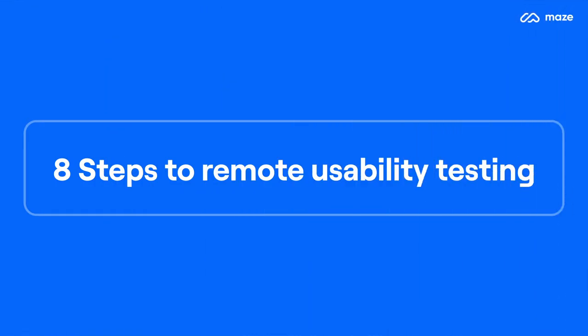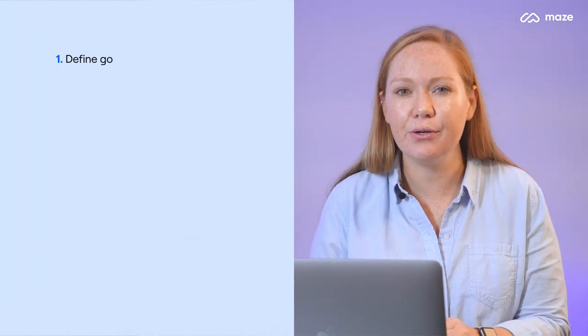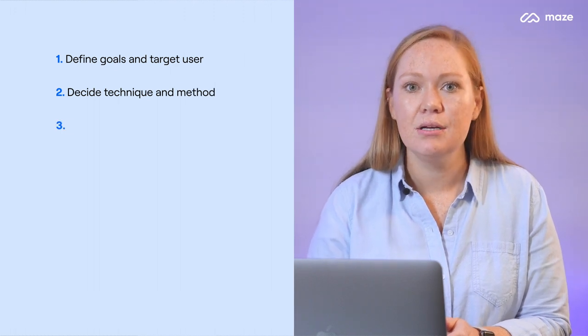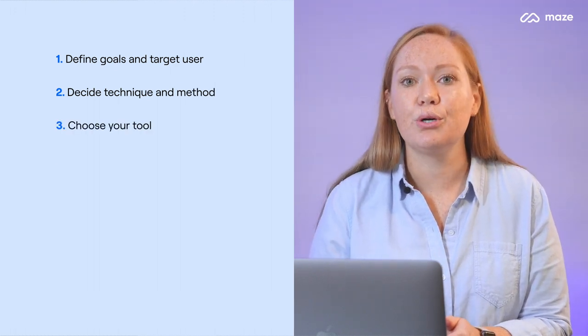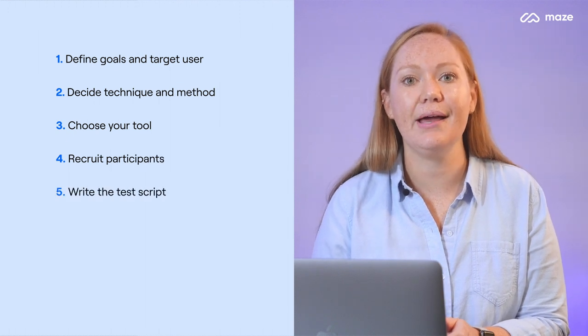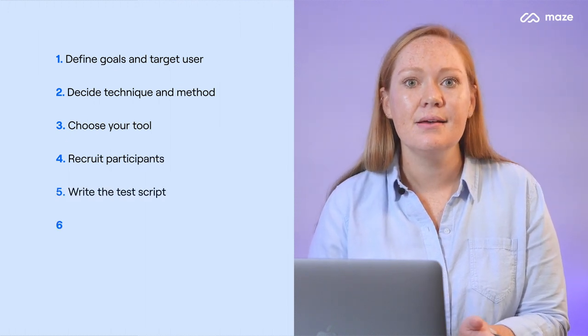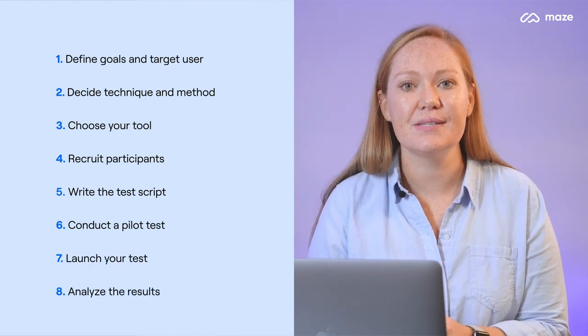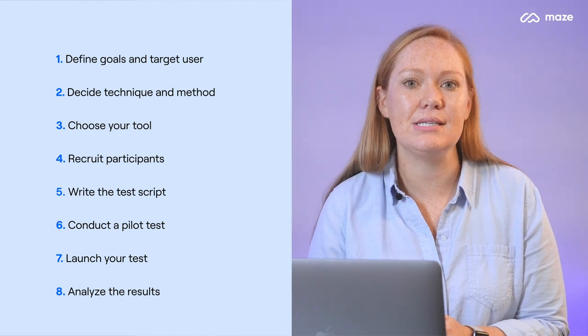So now we know what remote usability testing is, let's get into how you do it. To run a remote usability test that gathers the data you need, there's usually eight key steps which we'll go through today. First up, you need to define your goals and evaluation criteria. Then you need to decide on your technique and method, choose your testing tool, recruit the participants, write your test script and set the tasks, conduct a pilot test, launch the real thing, and finally analyze your results.